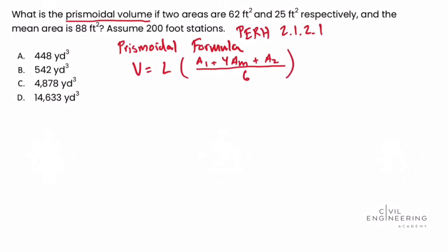So we're going to look at the problem statement and see what variables we have and what we're solving for. So we already said we're being asked to solve for the prismoidal volume. So that is V equal to L. Length is,